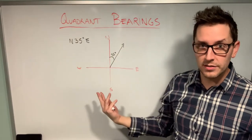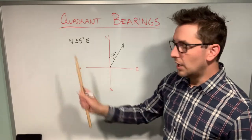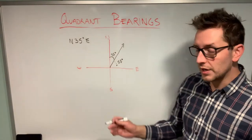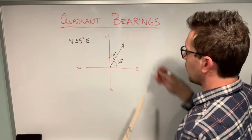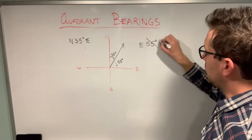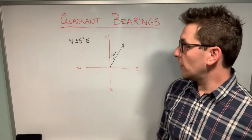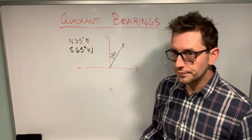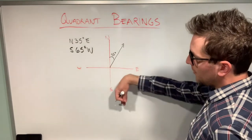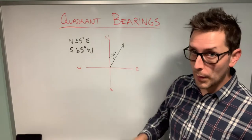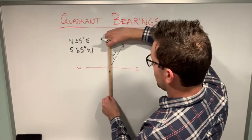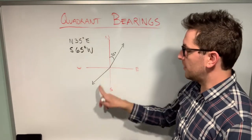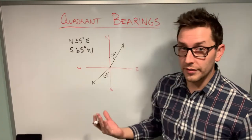One important rule with quadrant bearings: the first letter is always north or south. So while the complementary angle here is 55 degrees, we would never write E55°N — that's not valid quadrant bearing notation. Let's look at an example starting with south: S65°W. Start on the southern axis and rotate 65 degrees toward the western axis, always clockwise. The angle between the southern axis and the vector is 65 degrees.